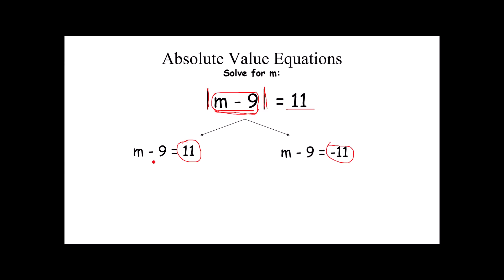Once you split these, it's actually very easy to solve. Over here on the left, to get rid of a minus 9, I do plus 9 on both sides. Over here on the right, to get rid of minus 9, I do plus 9 on both sides. I end up with m equals 20 or m equals negative 2. Both 20 and negative 2 will give me values that are 11 spaces from 0. Let's check that. 20 minus 9 is 11, absolute value of 11 is 11. If I put a negative 2 in, negative 2 minus 9 is negative 11. The absolute value of negative 11 is 11. Either way, when plugged into the expression, will make the statement true.